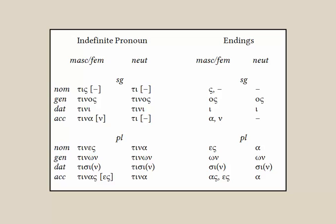In fact, the epsilon-sigma form in the accusative plural never shows up in that form — it will be contracted. So if you actually see the letters epsilon and sigma, that will be the nominative plural ending.